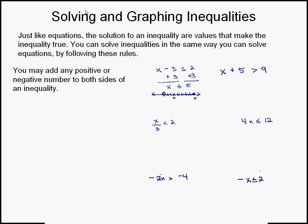Let's take a look at the next inequality: x plus 5 is greater than 9. Here, I'm going to subtract 5 from both sides of the inequality. The idea is to get the variable on one side by itself. So I'm left with x, and 9 minus 5 is 4. So x is greater than 4 — the solution is all numbers greater than 4, but not including 4.